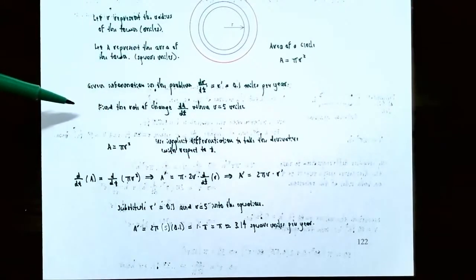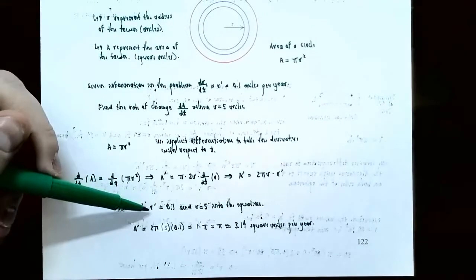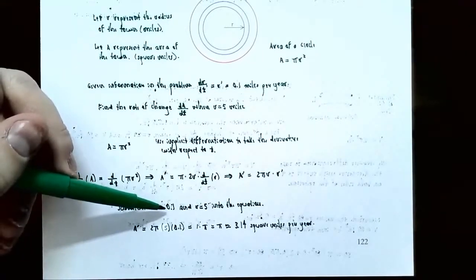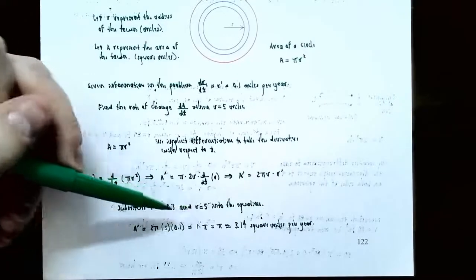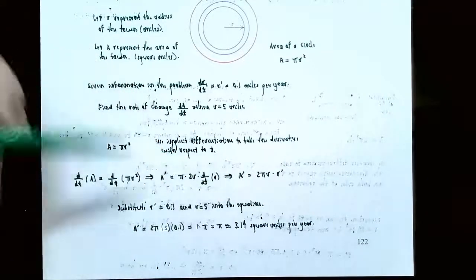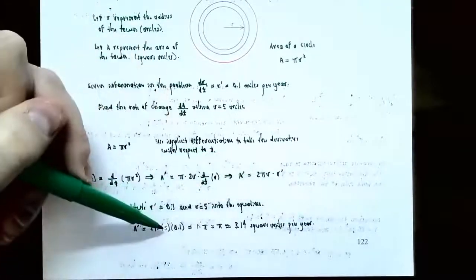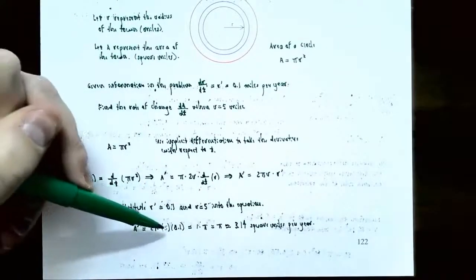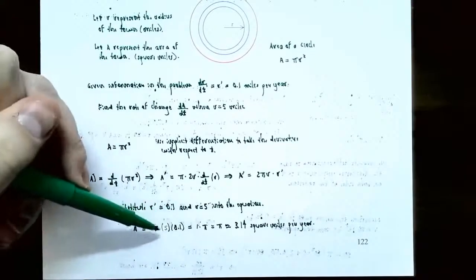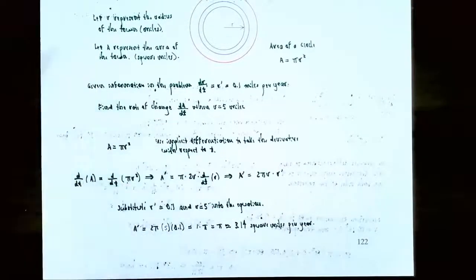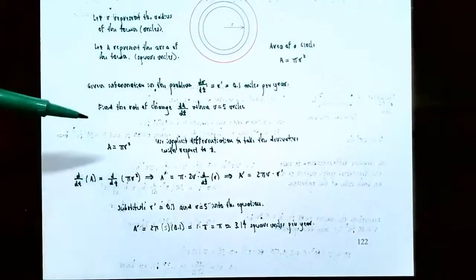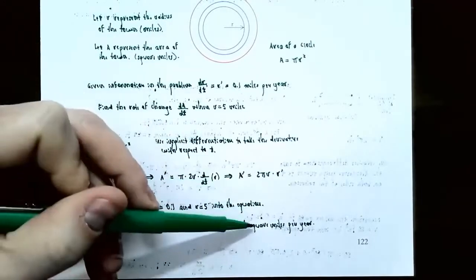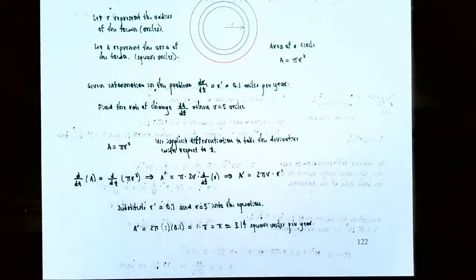Substitute r prime equals 0.1 miles per year and radius equals 5 miles into the equation. So A prime equals 2 times pi times 5 times 0.1. After simplifying, 2 times 5 times 0.1 gives 1, so A prime equals pi, approximately 3.14 square miles per year. The town's area is increasing at about 3.14 square miles per year.